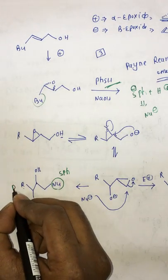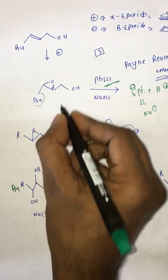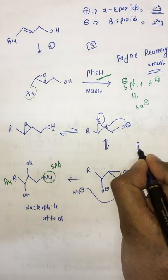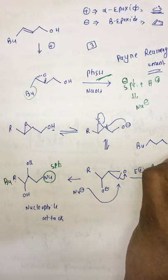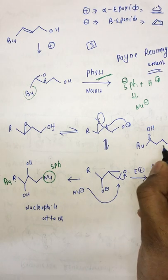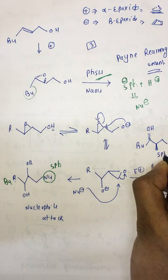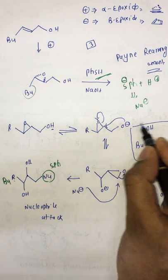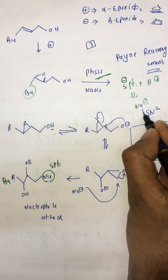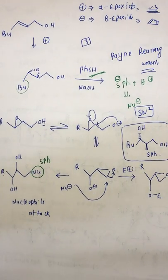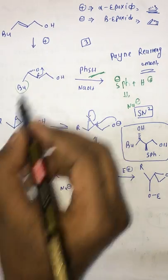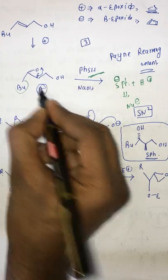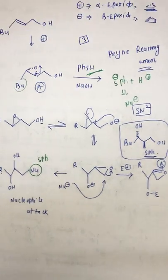Writing the product: R is the t-Bu group, with one OH below the plane, another OH here, and the group which comes in should be above the plane. Remember, in base-favored epoxide opening the SN2 mechanism applies — if the epoxide opens from below the plane, the nucleophile comes from above the plane. This is product A; product B completes the Sharpless asymmetric synthesis answer.